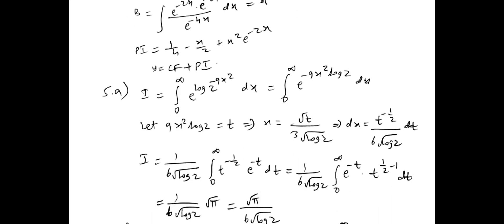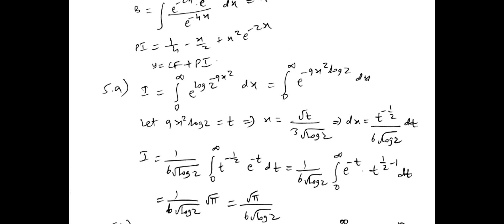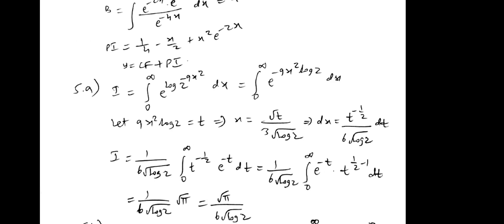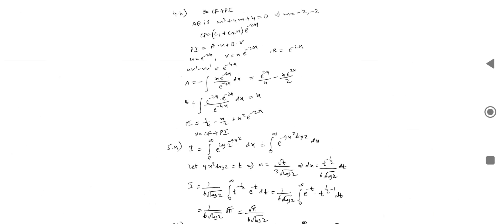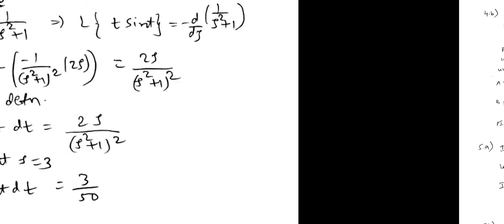Fifth my A bit beta gamma functions. So this can be written as e power log. Then you have to take it 9x square log z is equal to t. Then you will get the x value, then dx value. Then substitute and integrate it. Then fifth my A bit. One second. Fifth my A is over right.